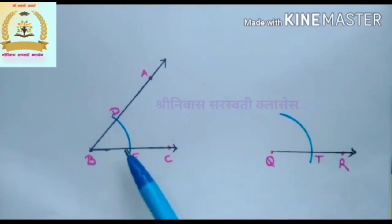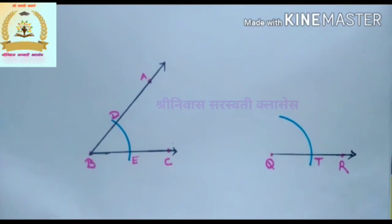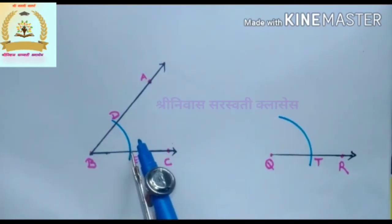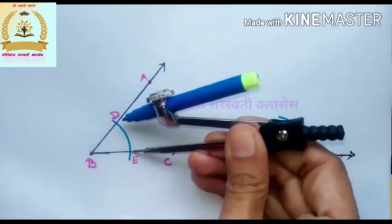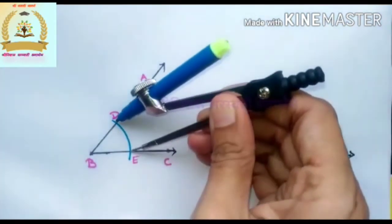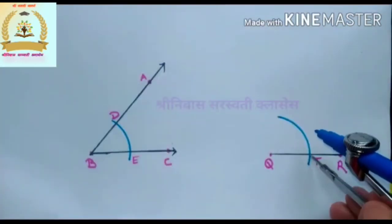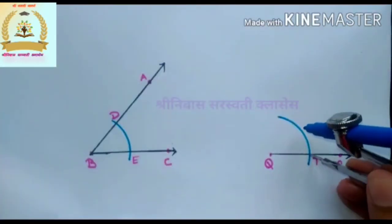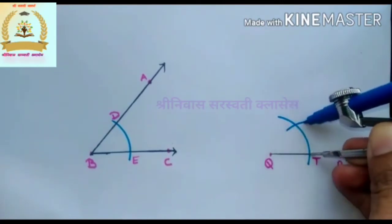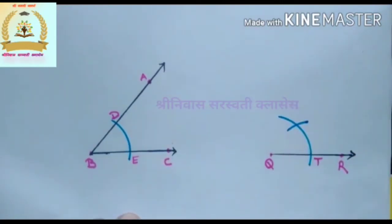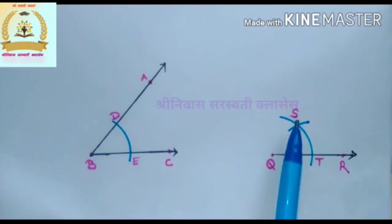Now place the compass point at point E in angle ABC and open the compass to a distance equal to DE. Then place the compass point on point T on ray QR and, using the distance equal to DE, draw an arc to cut the previous arc at point S.